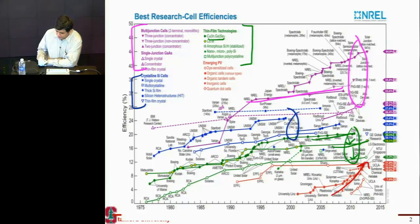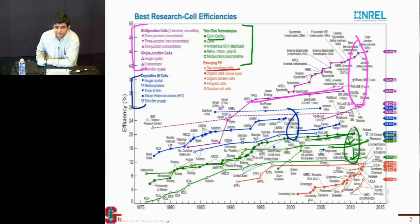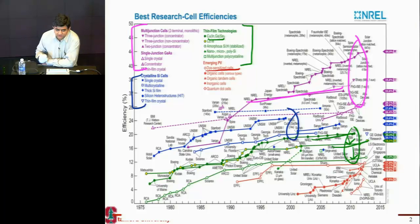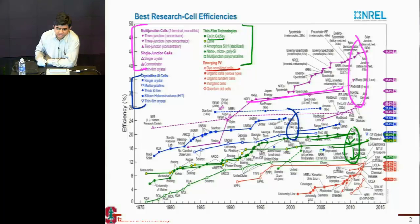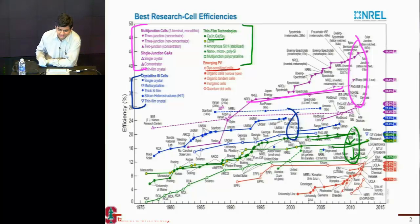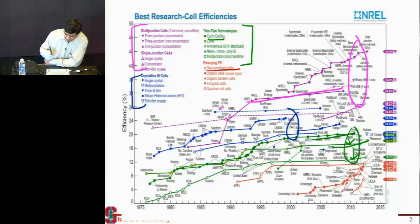One thing I have intentionally left out is the dye-sensitized cell, and it is covered in one of the problem set questions where you watch a video of a person making a dye-sensitized cell. It's very easy to make — it uses things like raspberries and strawberries, and you mix them to make these cells. It's a fun video, so if you get time, watch that in class.